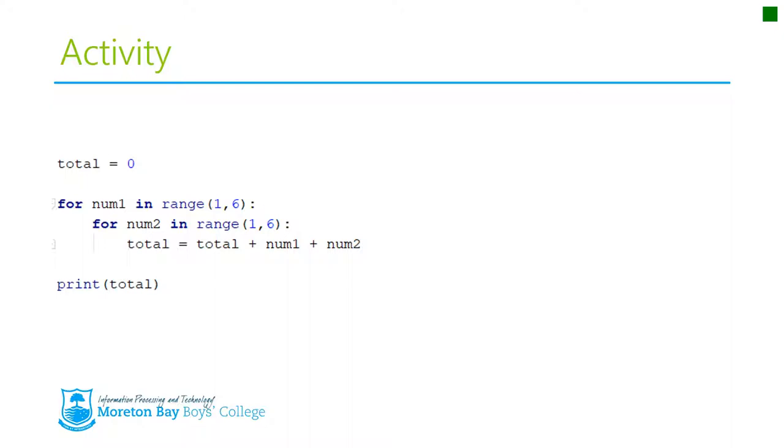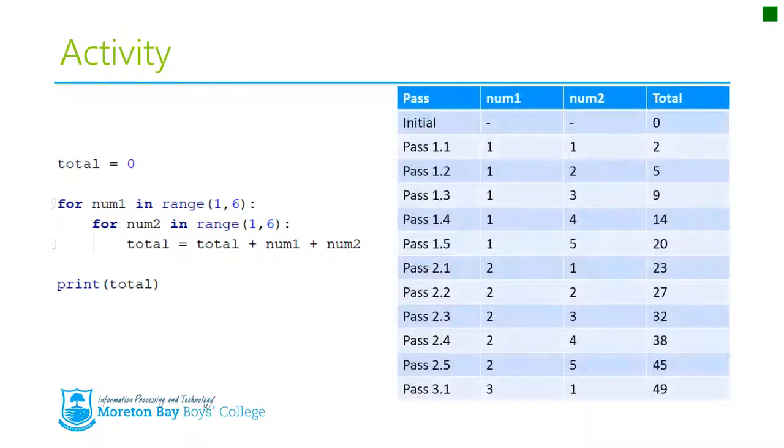And welcome back. Okay, so here is the actual solution. Well, part of the solution it goes down through here. And this is where actually in nested I like using the dots to show which particular pass it's going through.